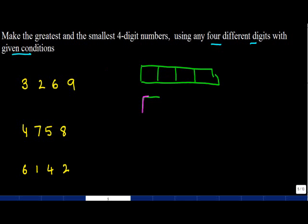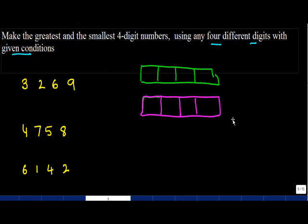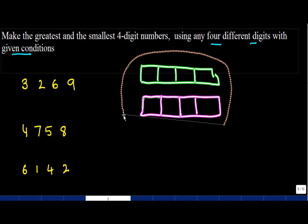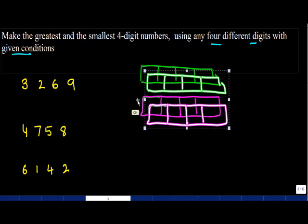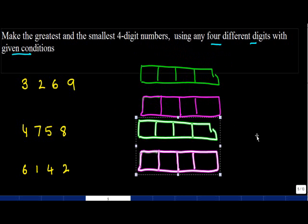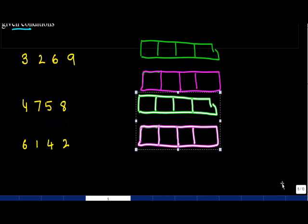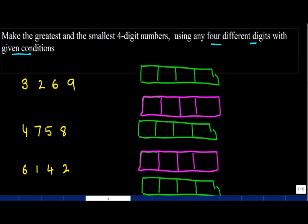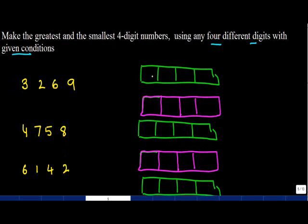I'll put the greatest number in green and the smallest one in pink. I'll copy the setup for each example and give you some conditions. So for each set we will find the greatest and the smallest.